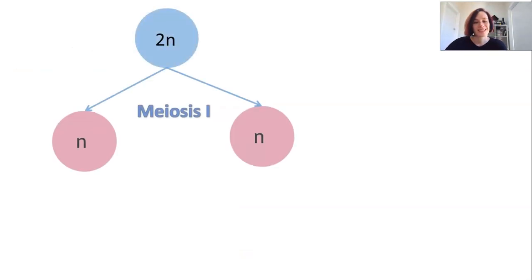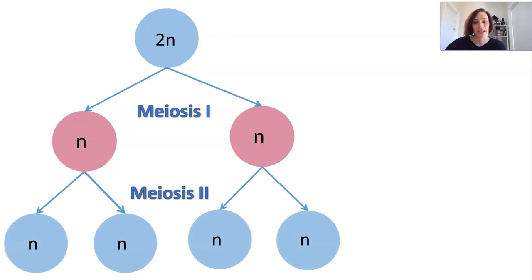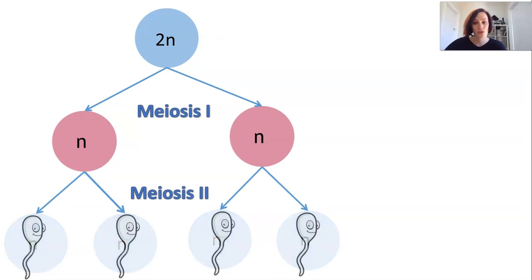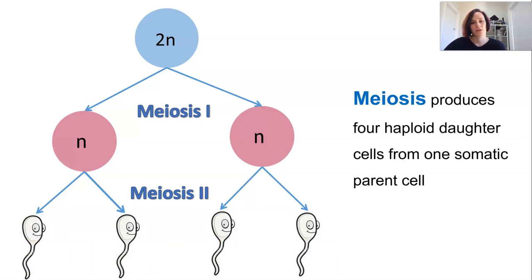Now meiosis takes one diploid somatic parent cell and creates four haploid daughter cells. In this situation we've created gametes that are sperm. It occurs only to create gametes and therefore it occurs only in certain organs and tissues in an organism.